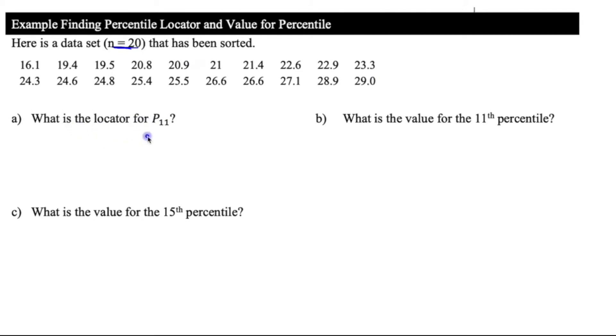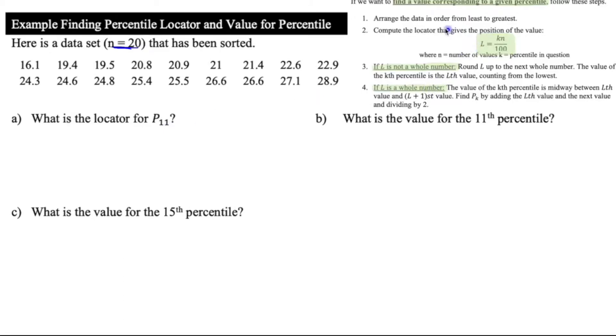So the first question says, what is the locator for p sub 11? So the first thing that we want to do is we want to remember what is the locator formula? Well, the locator formula is L is equal to k times n divided by 100.